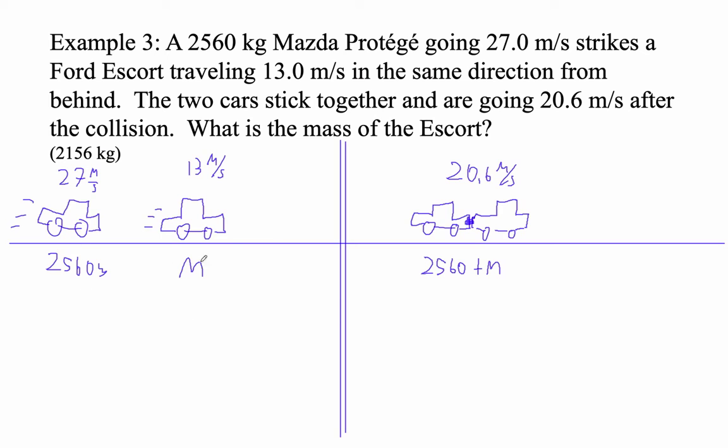So all we do is we just set the momentum equal. So momentum, remember, is M times V. So I'm going to go 2,560 times 27 plus M times 13 equals 2,560 plus M times 20.6.